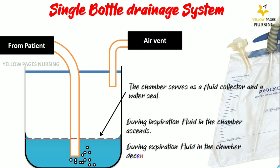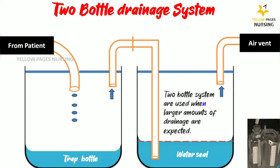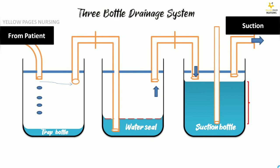In the double bottle drainage system, a separate tube chamber permits fluid to flow into the collection chamber as air flows into the water seal chamber. Double bottle systems are used when larger amounts of drainage are expected. One container serves as the trap bottle and the other as the water seal.